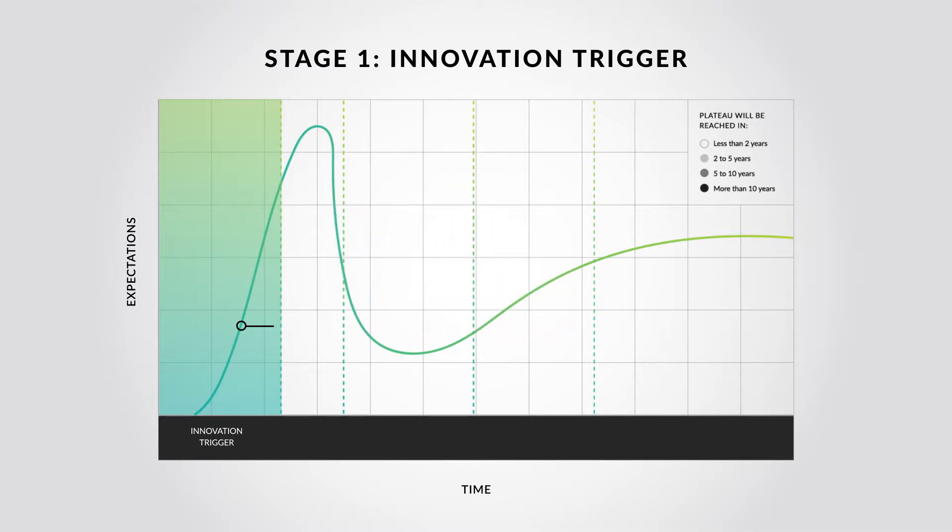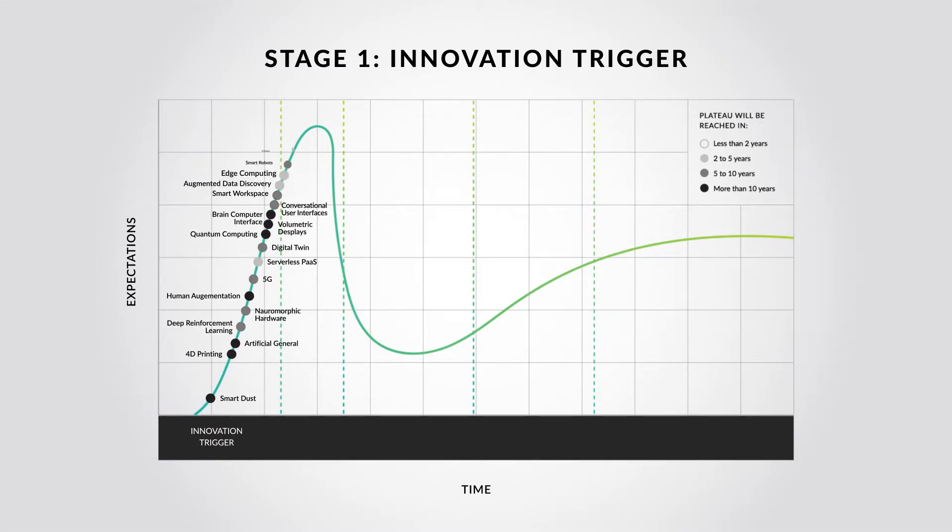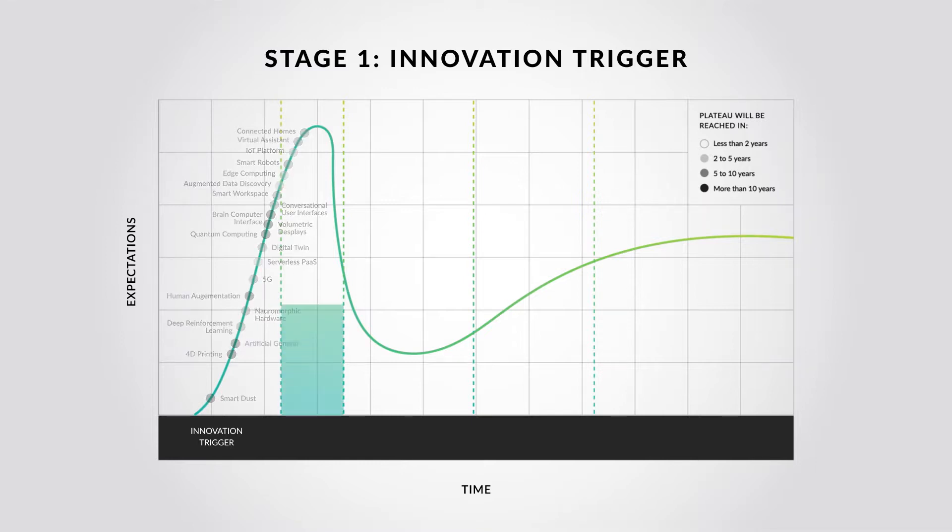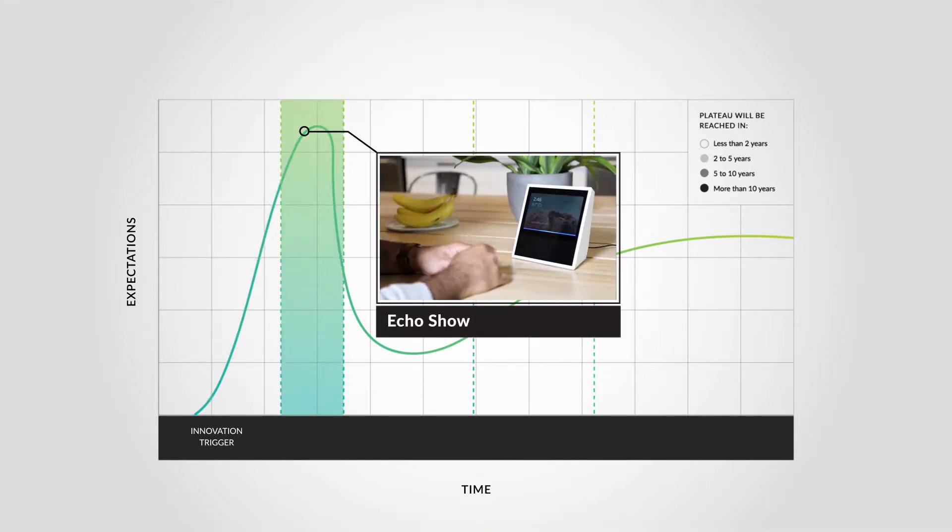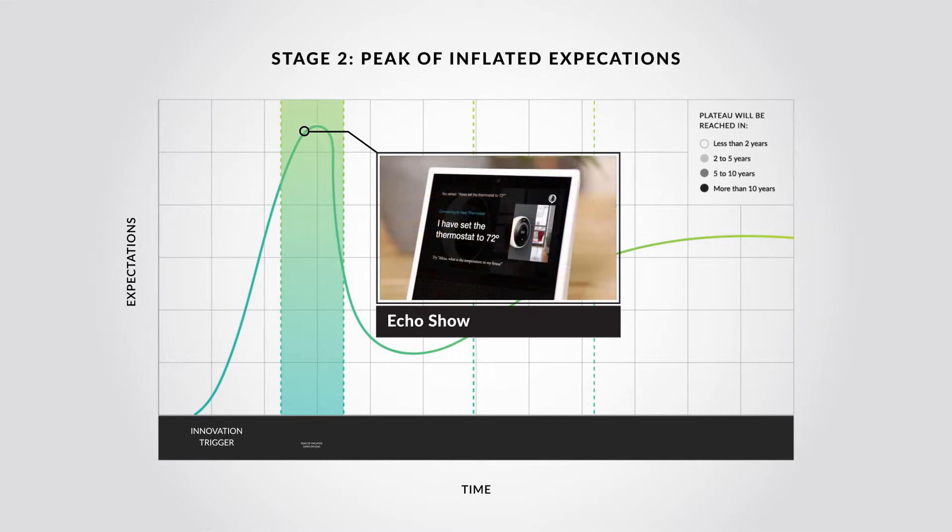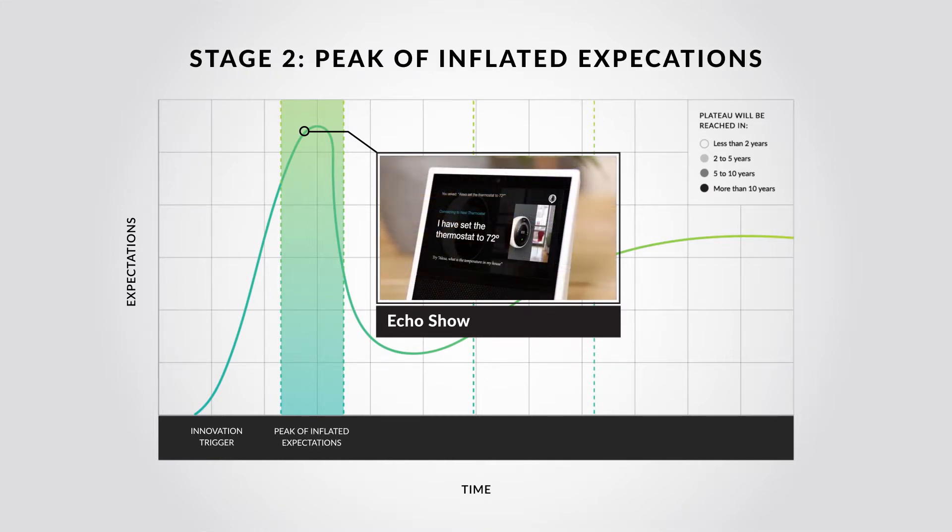As word spreads, our new technology climbs up the curve. Media coverage increases. We see use beyond early adopters. Here, we see technologies like connected homes. This is the peak of inflated expectations.